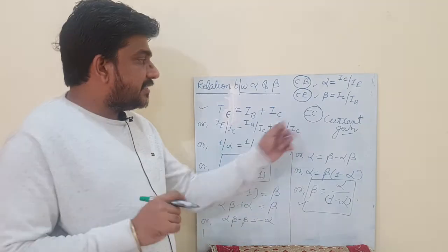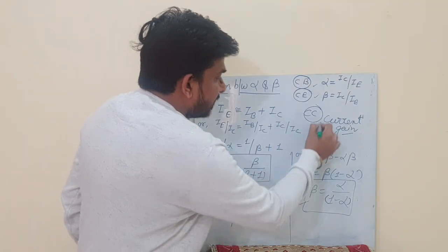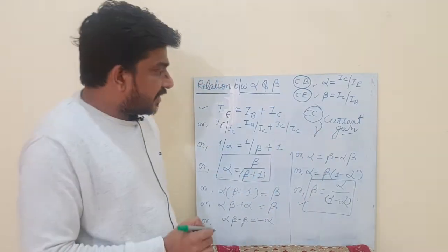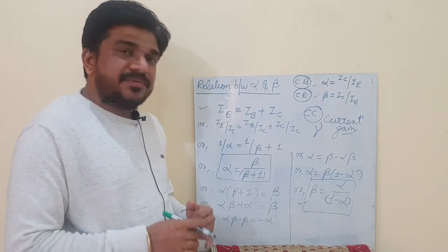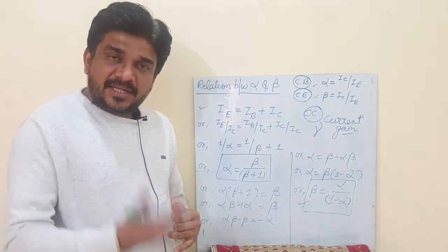The current gain in CC configuration is called gamma. I will tell you the relations between alpha, beta and gamma in the next short video.